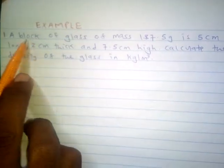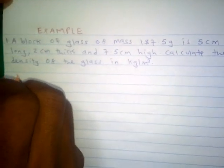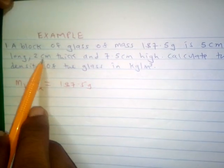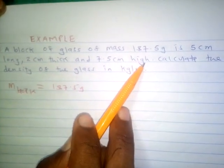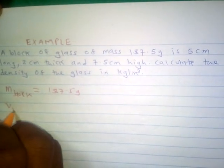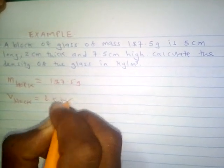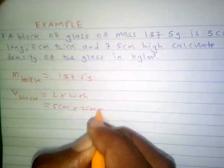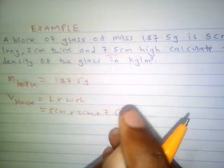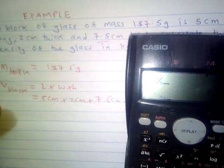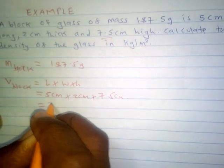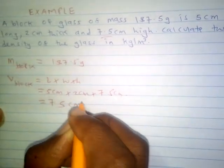For example one, we have a block of glass with a mass of 187.5 grams. It is 5 centimeters long, 2 centimeters thick, and 7.5 centimeters high. The volume of the block equals length times width times height, which is 5 times 2 times 7.5, giving us 75 cubic centimeters.